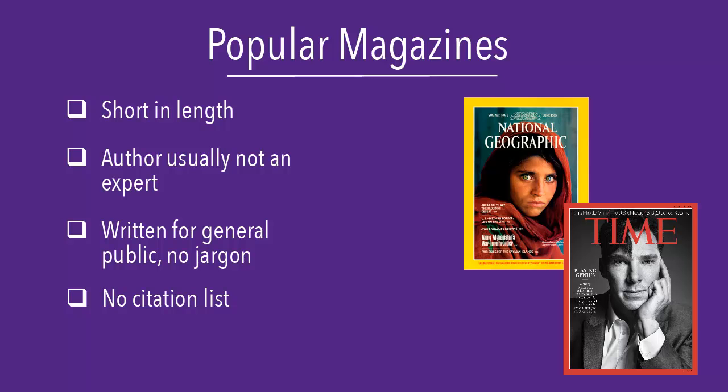Examples of popular magazines are Time and National Geographic. These sources can have good information, but they usually aren't appropriate for research papers.